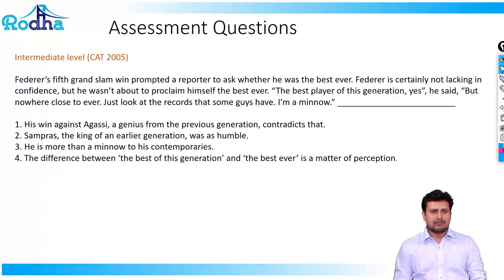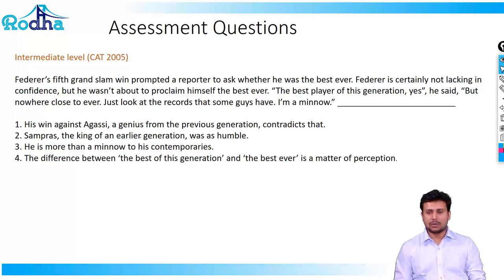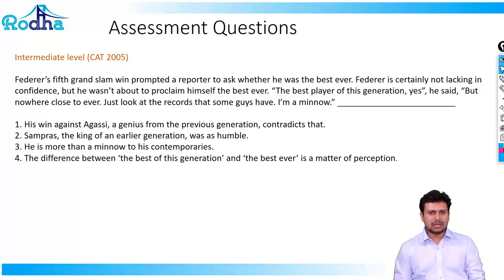The next question says: Federer's fifth Grand Slam win prompted a reporter to ask whether he was the best ever. Federer was certainly not lacking in confidence but he wasn't about to proclaim himself the best ever. 'The best player of this generation, yes,' he said, 'but nowhere close to ever. Just look at the records that some guys have — I am a minnow.' The last line should summarize the distinction between 'best of this generation' versus 'best ever.'